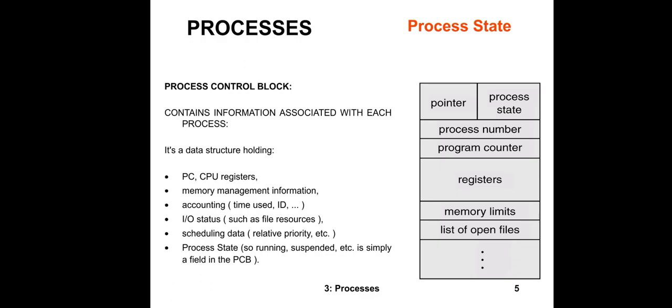That data structure holds information like CPU registers, as well as memory management information related to the processes. Then there is accounting information of the process — such as which time the process was created, what is the total execution time required for that process, what is the user ID of that process, and so on.